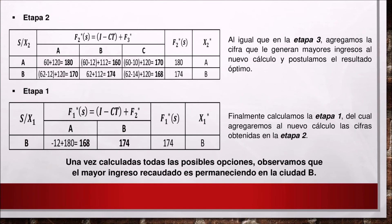Etapa 2: al igual que en la etapa 3, agregaremos la cifra que genera mayores ingresos al nuevo cálculo y postulamos el resultado óptimo. Etapa 1: finalmente, calculamos la etapa 1, a la cual agregaremos las cifras obtenidas en la etapa 2. Una vez calculadas todas las posibles opciones, observaremos que el mayor ingreso recaudado es permaneciendo en la ciudad B.